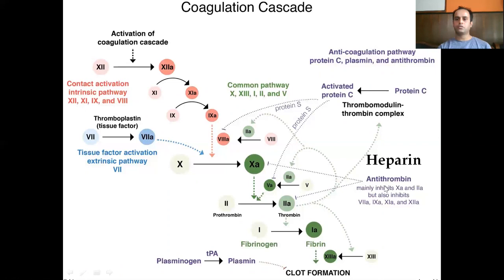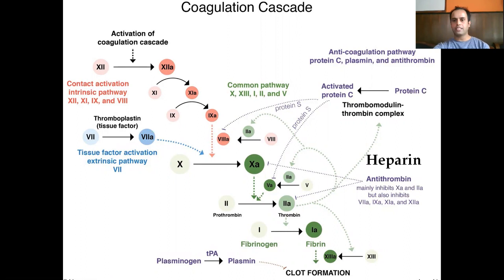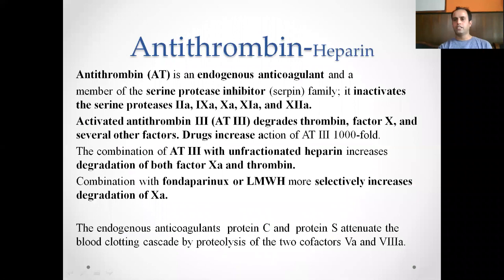Antithrombin is normally present in our body and works mainly by inhibiting factor Xa and factor IIa. Heparin acts by increasing the activity of antithrombin — heparin is a cofactor in antithrombin's action, inhibiting factors Xa, IIa, VIIa, IXa, XIa, and XIIa. Activated protein C inhibits factors VIIIa and Va. Plasminogen is converted to plasmin, which inhibits clot formation — this will be dealt with in the thrombolytics class later.